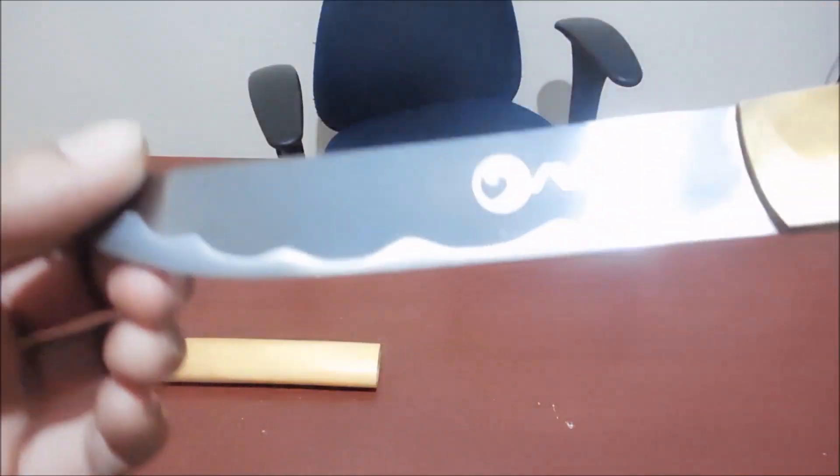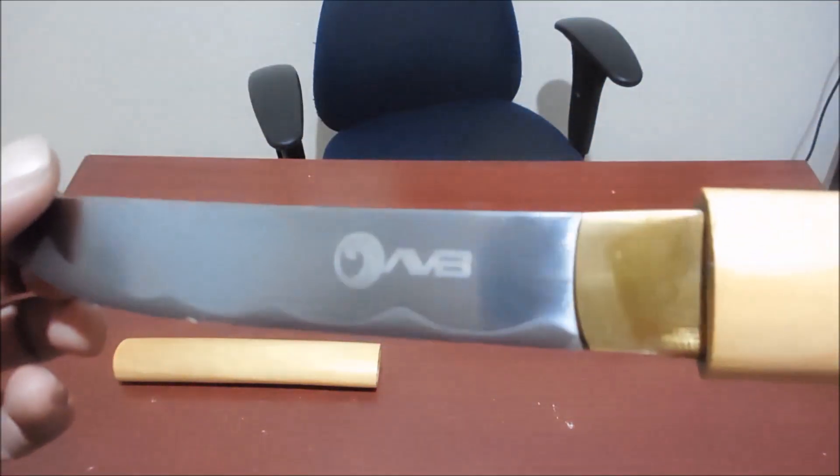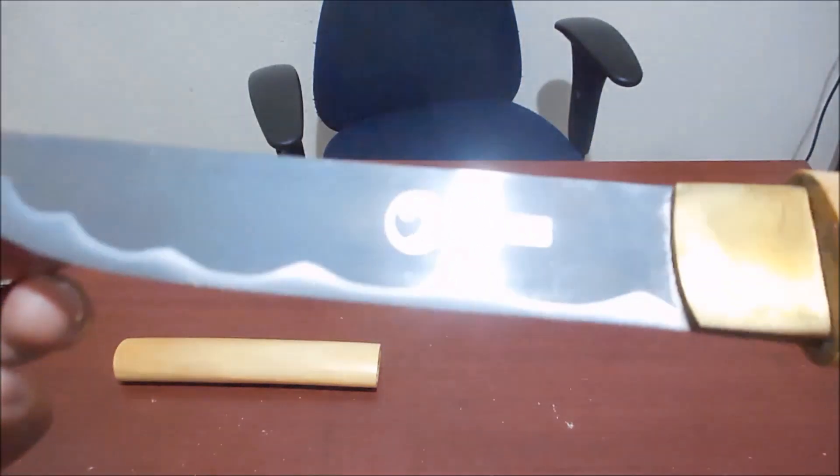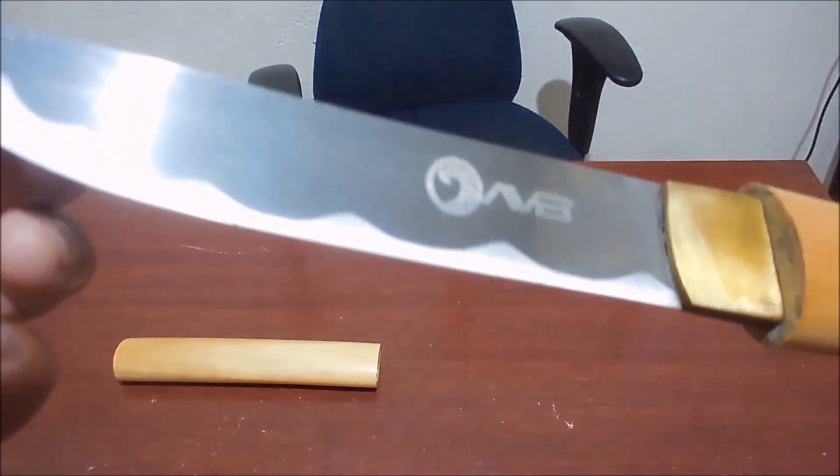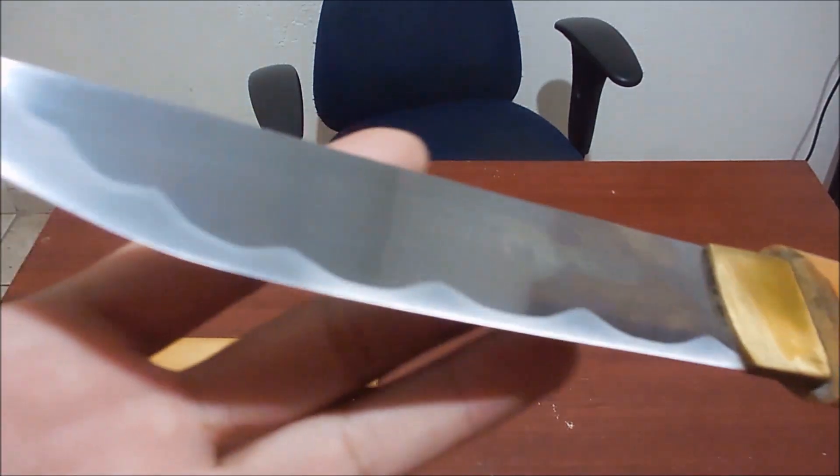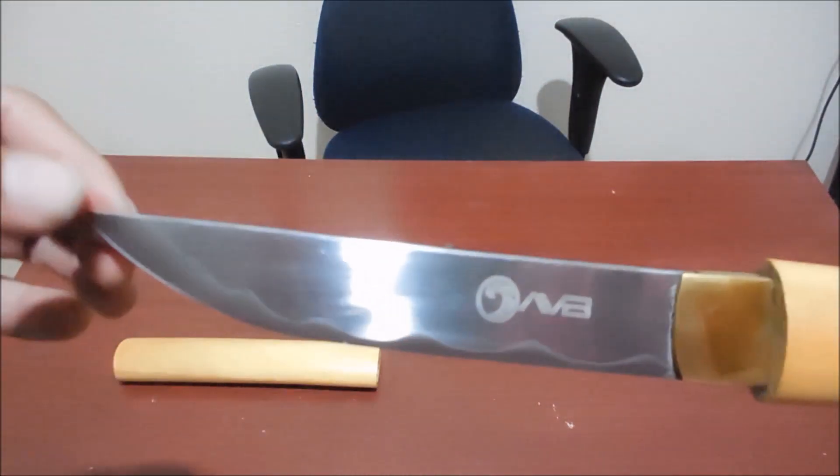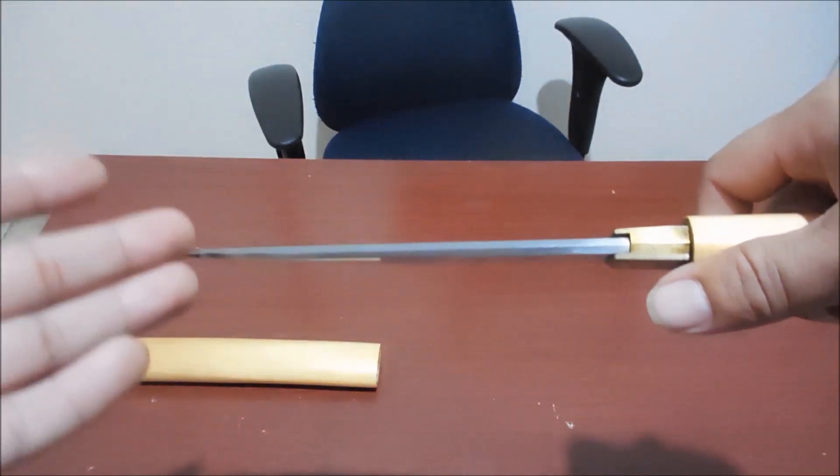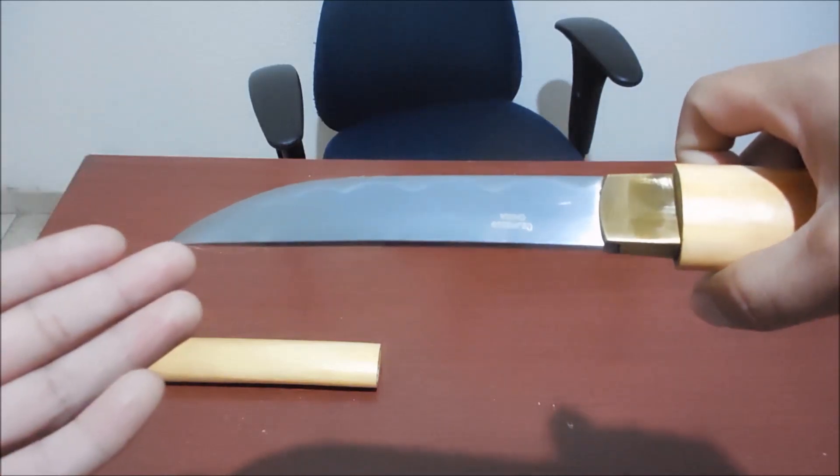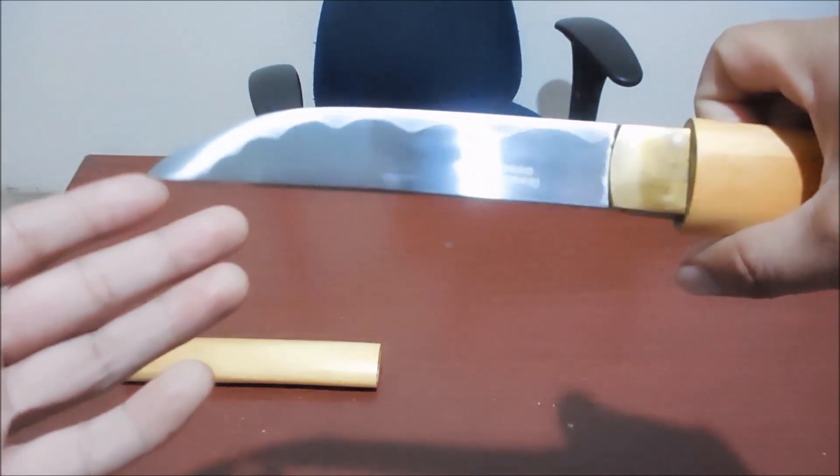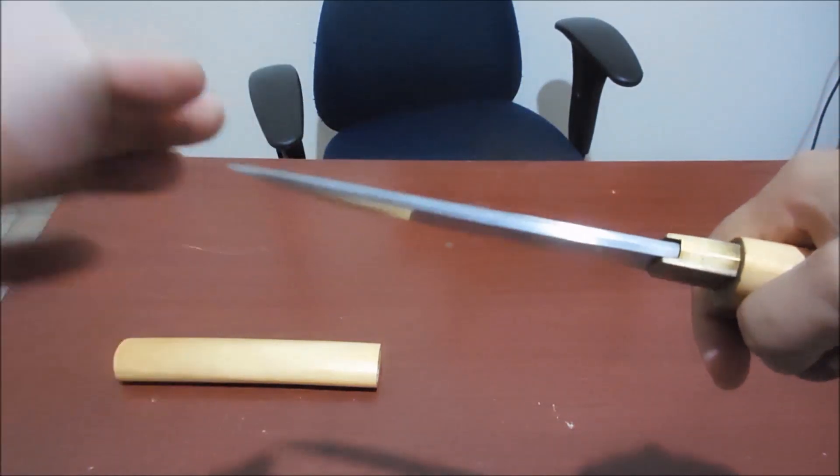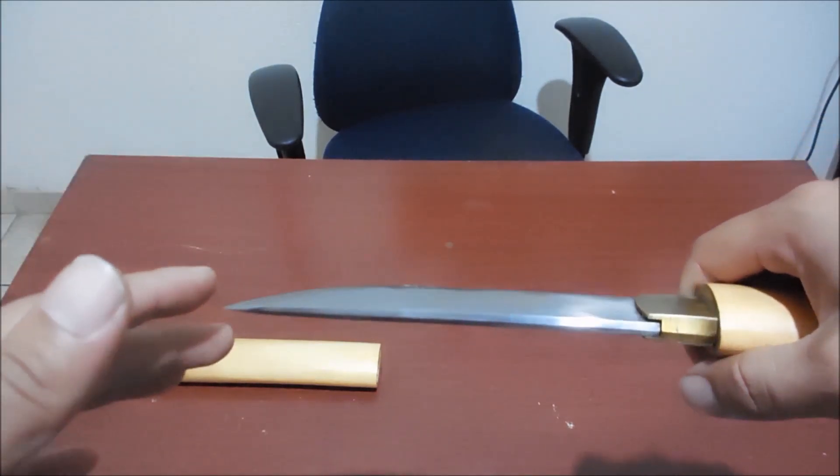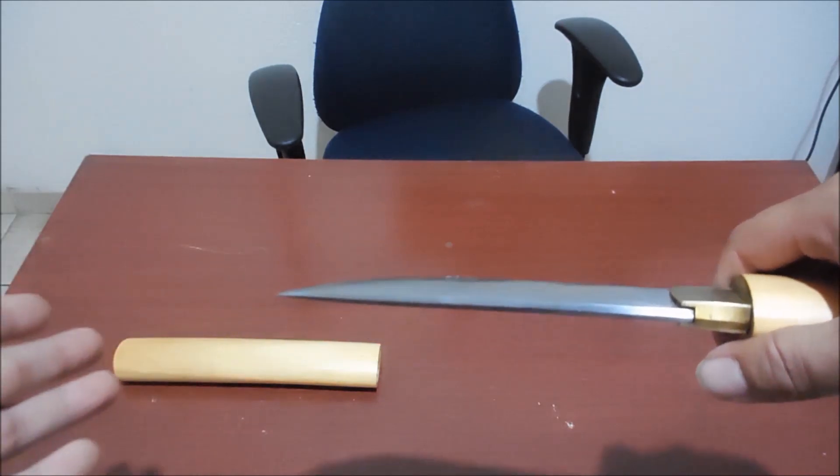On the other side of the blade there is a stamp where we can read AVB. I don't know if it's the brand of the company that made the blade. But this is the only blade with the characteristics of a true Tanto that I found available here in Brazil. And it has a very affordable price for a brand new blade.